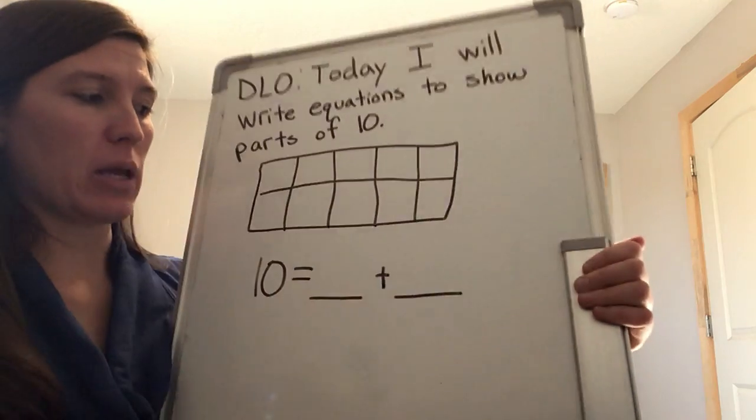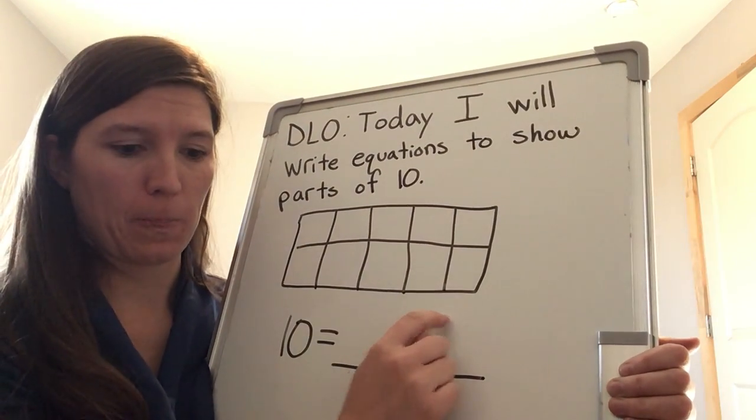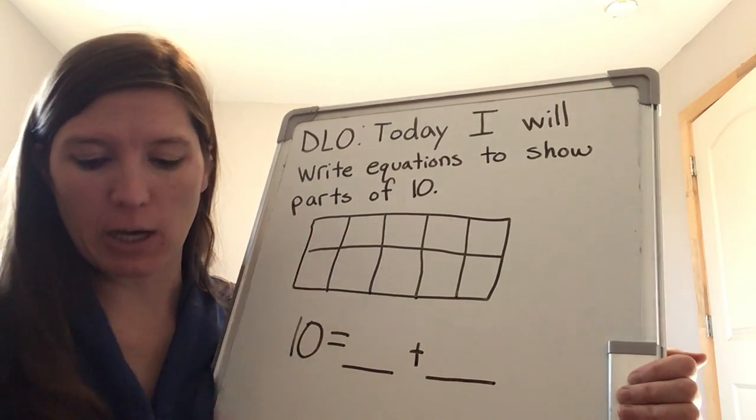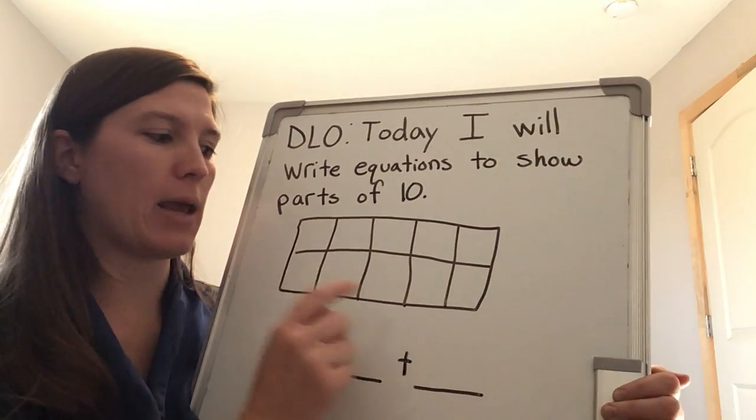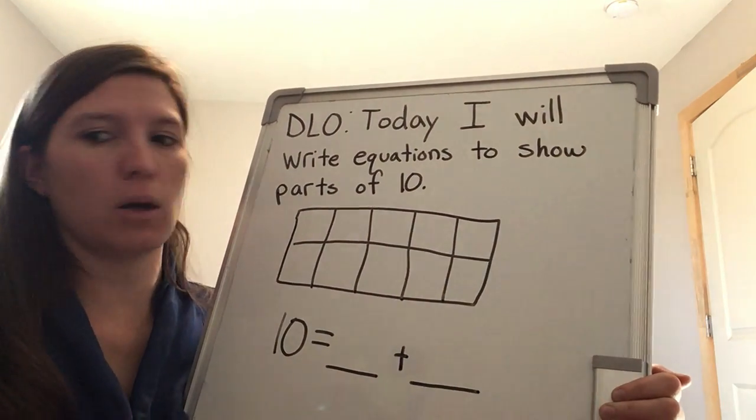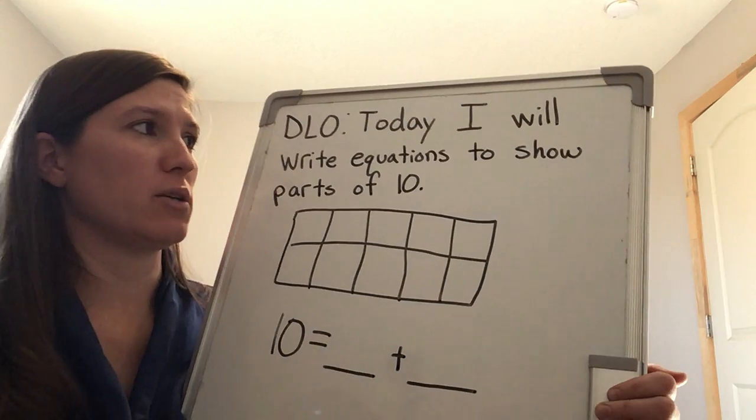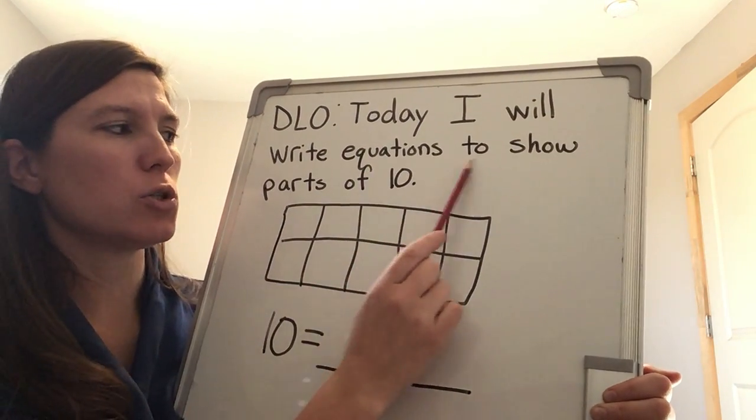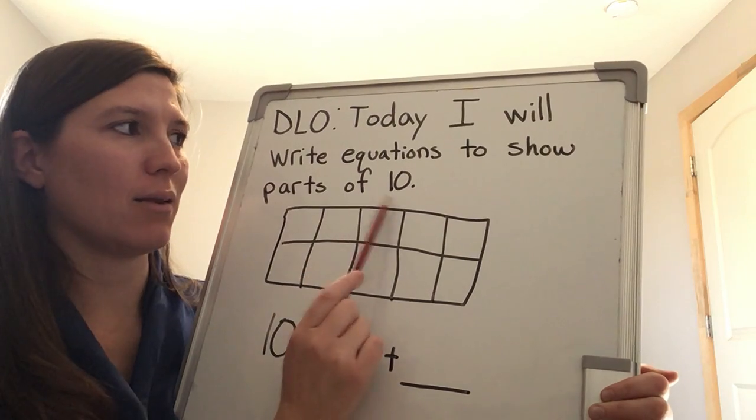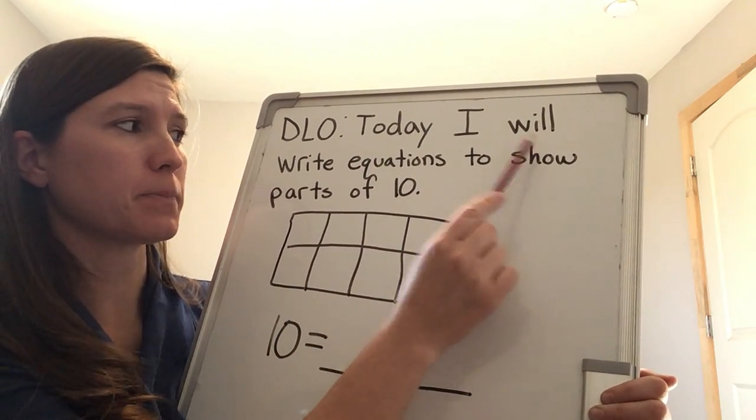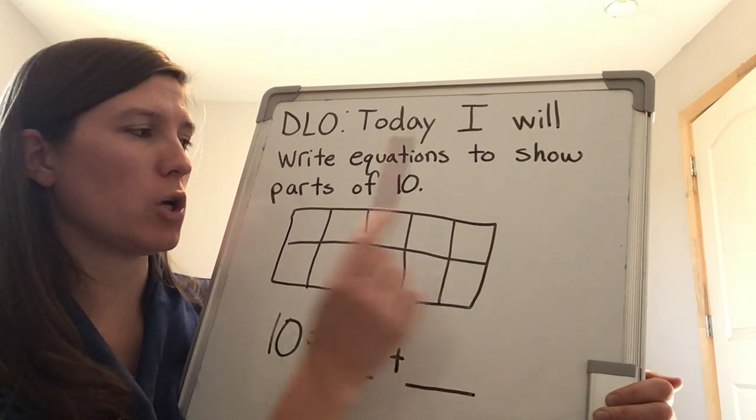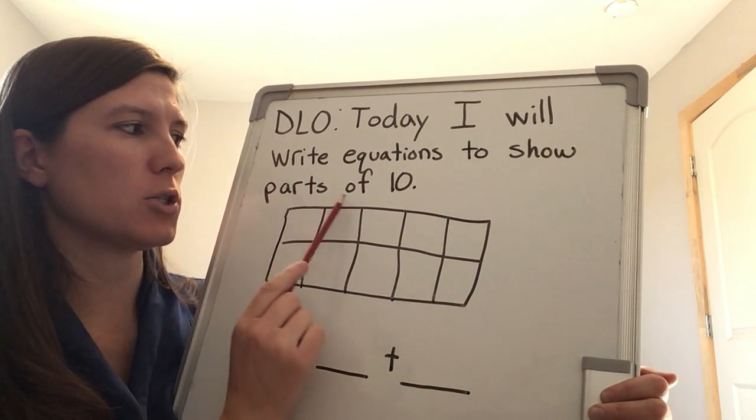Now today we're going to be writing an equation using a 10 frame. You can use your cubes if you want, but I would prefer if you got your flippy chips out because the flippy chips are how we're going to fill in our 10 frame today. So let's go over our DLO, our daily learning objective. Today I will write equations to show parts of 10. Now it's your turn. Today I will write equations to show parts of 10.